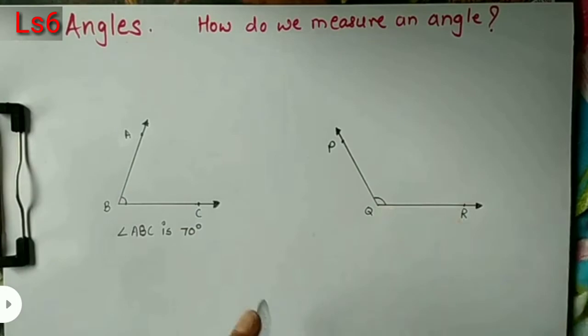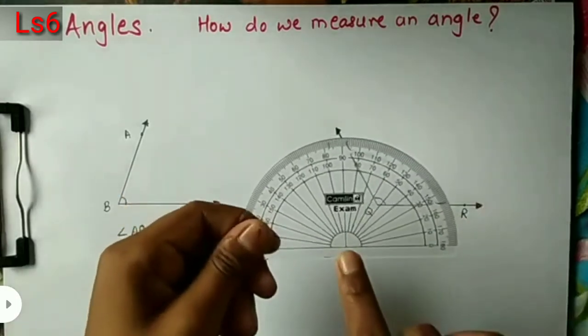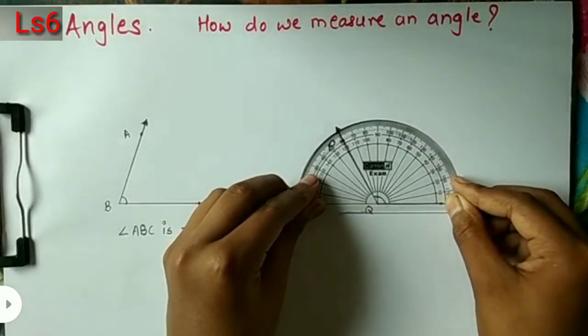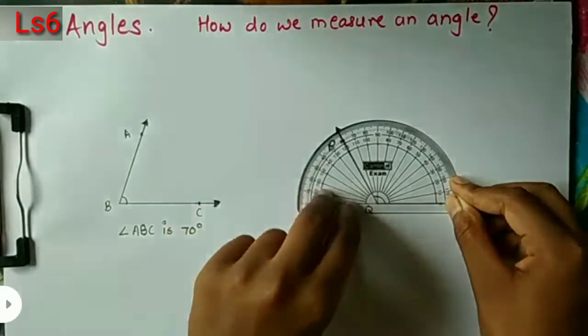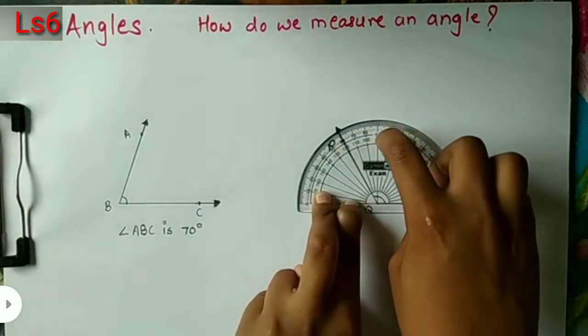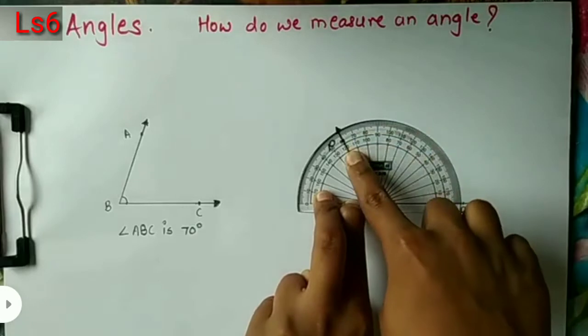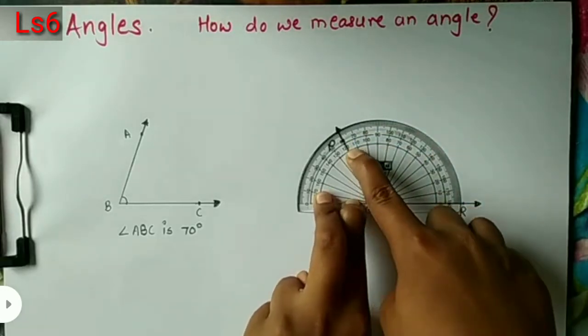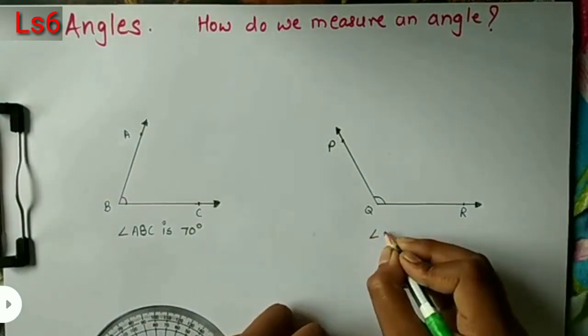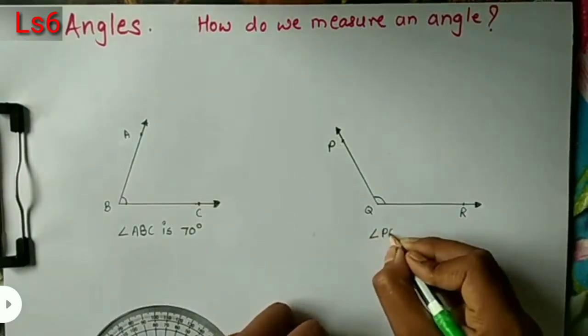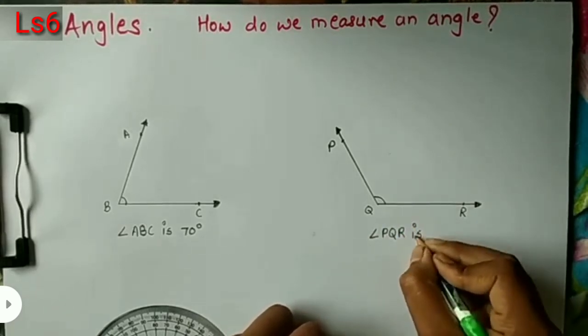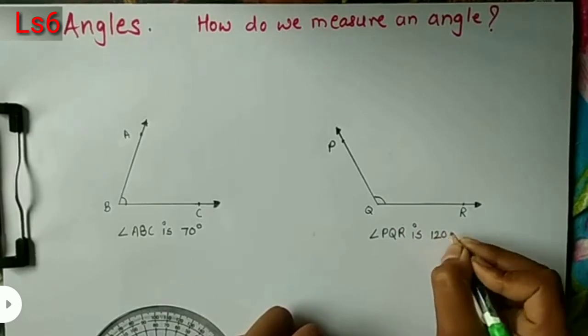Repeat this process for measuring the second angle. We put the protractor center on the vertex Q. Count the divisions starting from the 0 on the right. See the mark. Read the number on that mark. This number is the measure of the angle. The measure of angle PQR is 120 degrees.